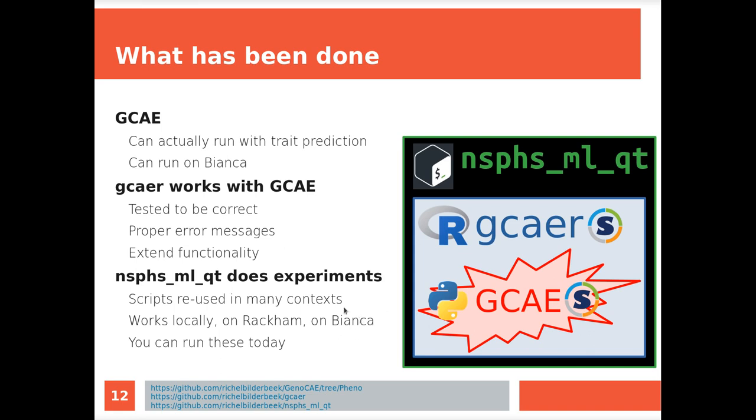The R package GCEAR calls the autoencoder, and it's tested to be correct. It gives proper error messages, and it extended the functionality. So it's a stricter version and also an extended version. Also that one has a singularity container. And then we have the collection of bash scripts. This slide is most of the work, but let's go back to the science.